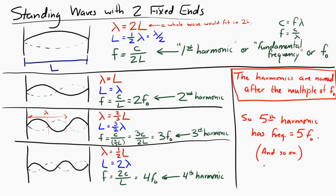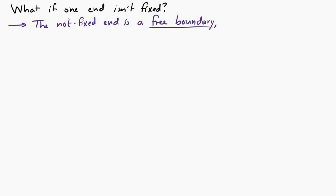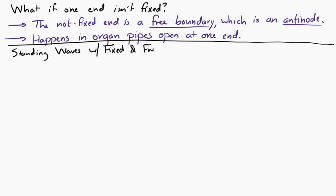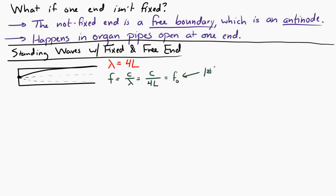What happens if one end of the string is not fixed? In that situation, the non-fixed end is called a free boundary. The free boundary, instead of being a node like with two fixed ends, is going to be an antinode. One common situation is an open organ pipe, which has one fixed end and one open end. The largest possible wave would have a wavelength equal to 4 times the length of the pipe, so the fundamental frequency equals C over 4L.